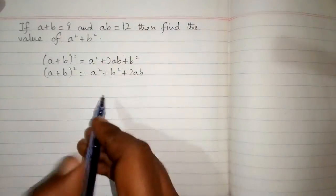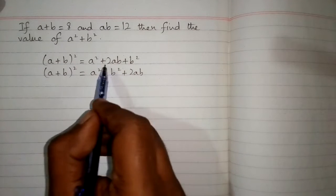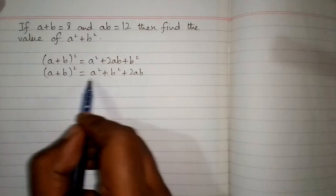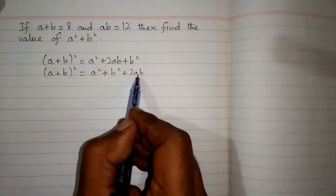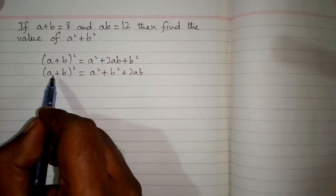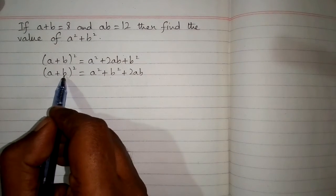So we have a²+b²+2ab. Now we can substitute the value of a+b, which is 8.